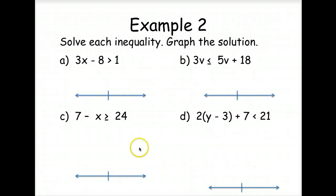Solve each inequality and graph the solution. So what do we need to do to begin solving this inequality? Well, we're going to add 8 to both sides, and then divide both sides by 3. So x is greater than 3. So if this represents 3, it's an open circle because it's greater than, not greater than or equal to. And it's greater than, so we go to the right.